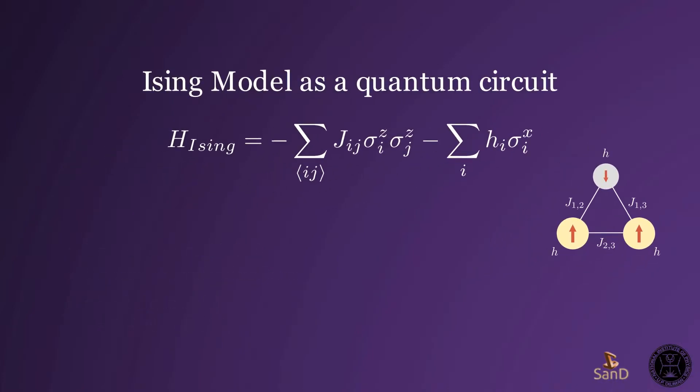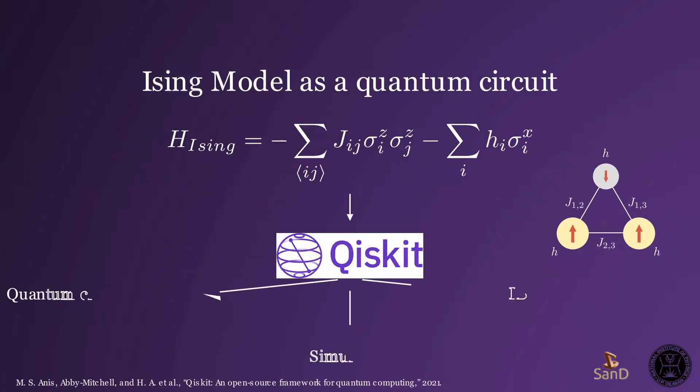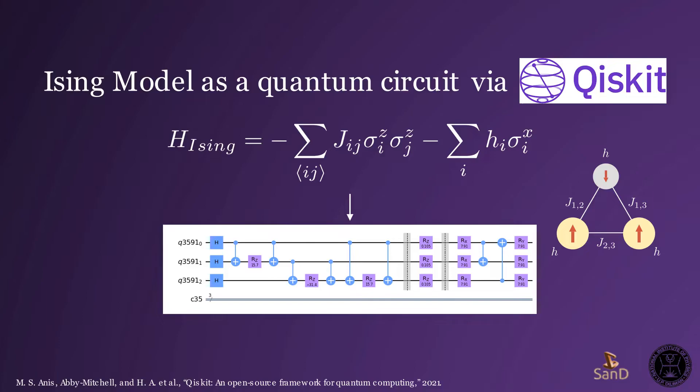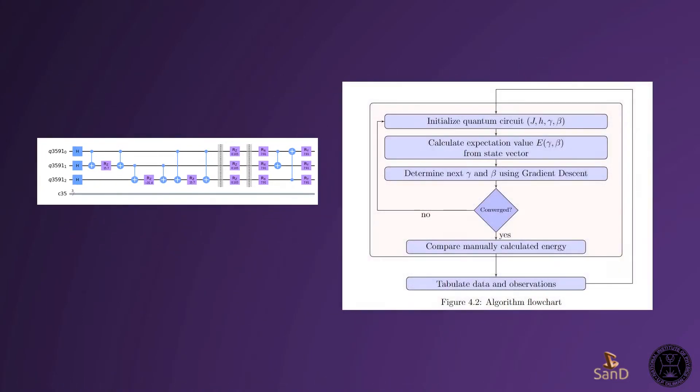To run this model through a quantum computer, we use Qiskit, a Python package which allows us to make quantum circuits and simulate or run them. This is what the quantum circuit looks like. This quantum circuit gives us the lowest system energy, and we continuously optimize this guess until convergence.